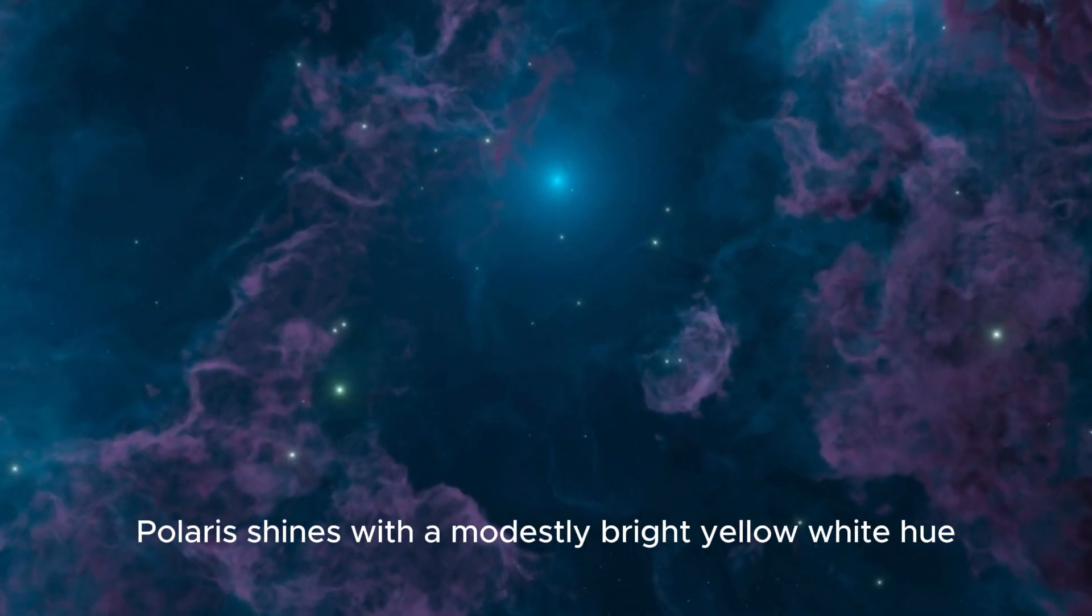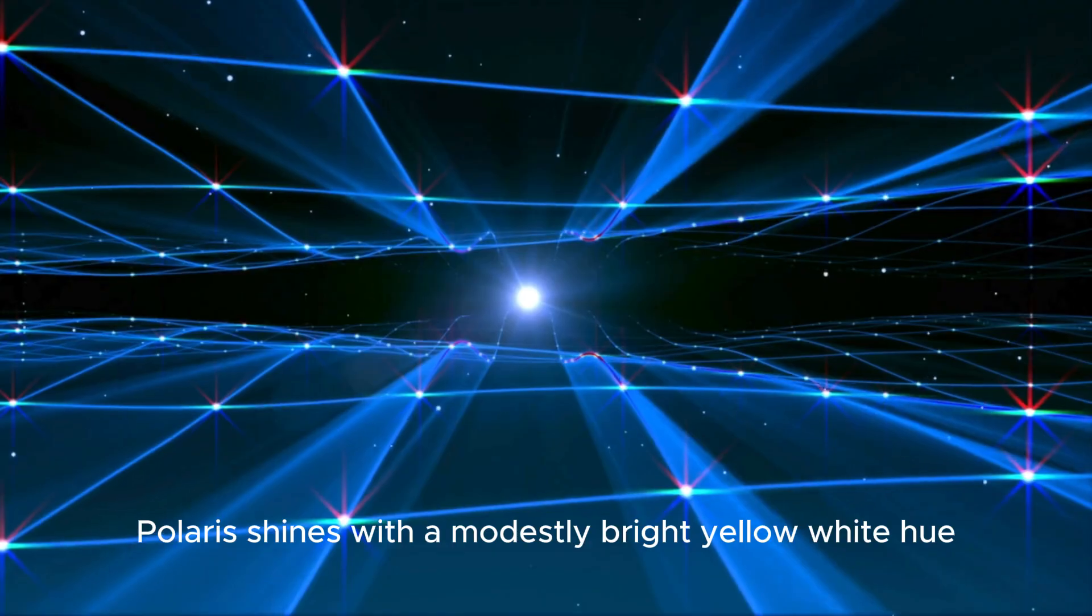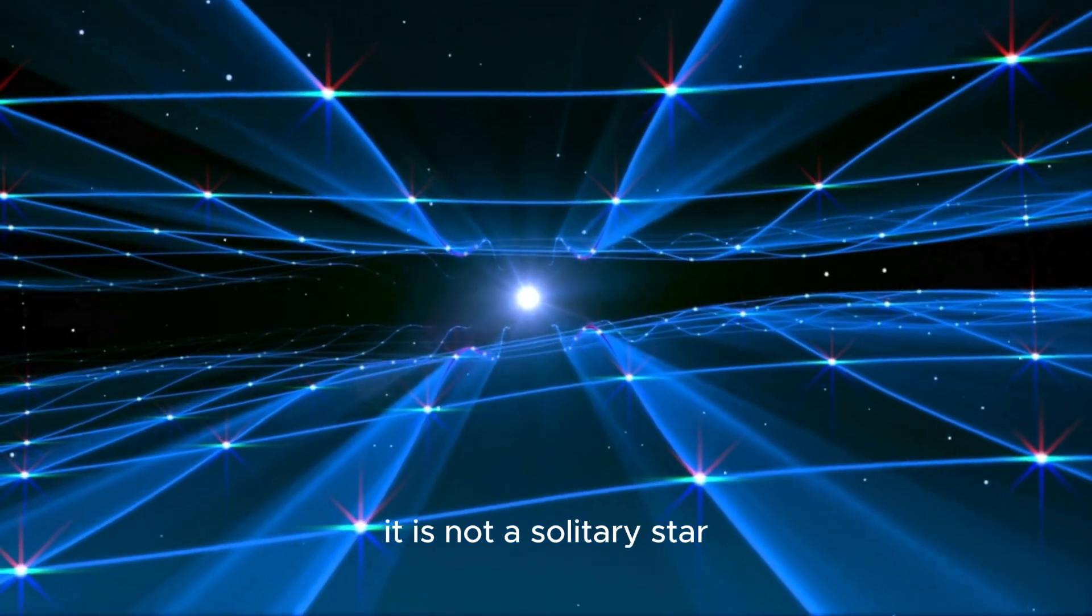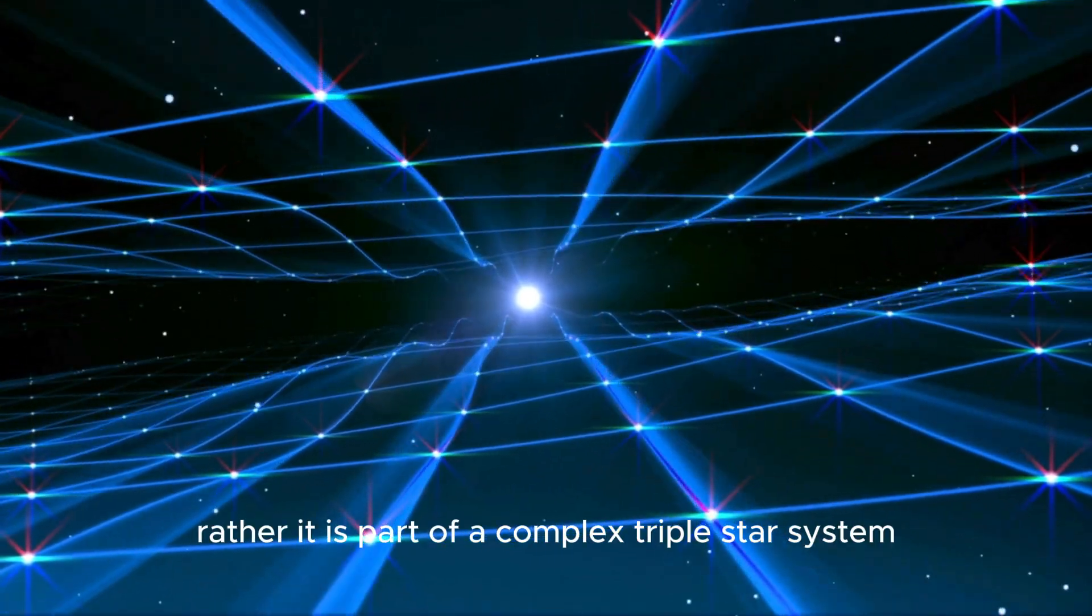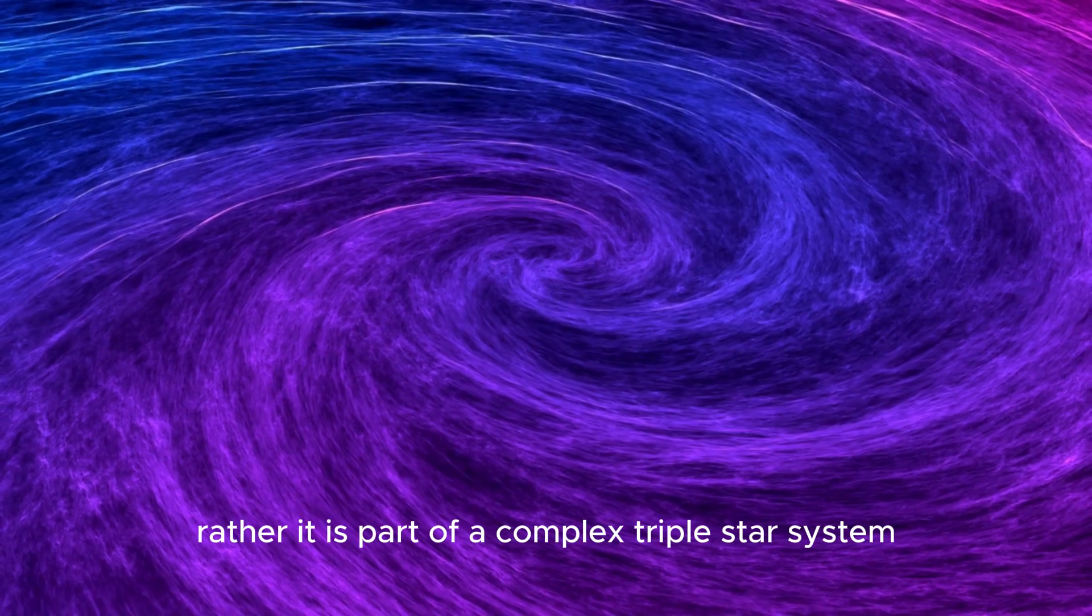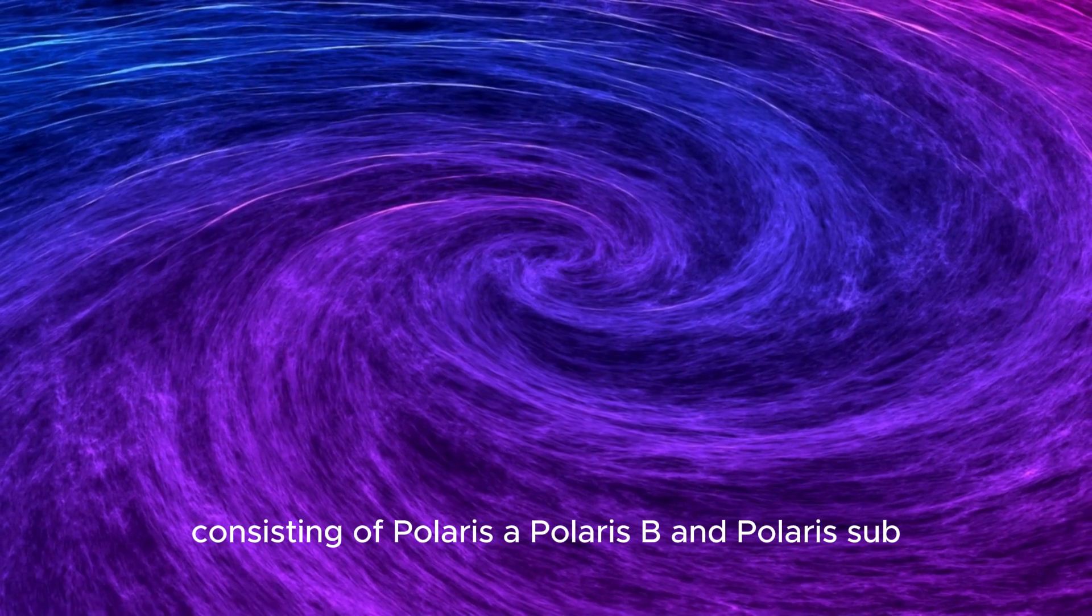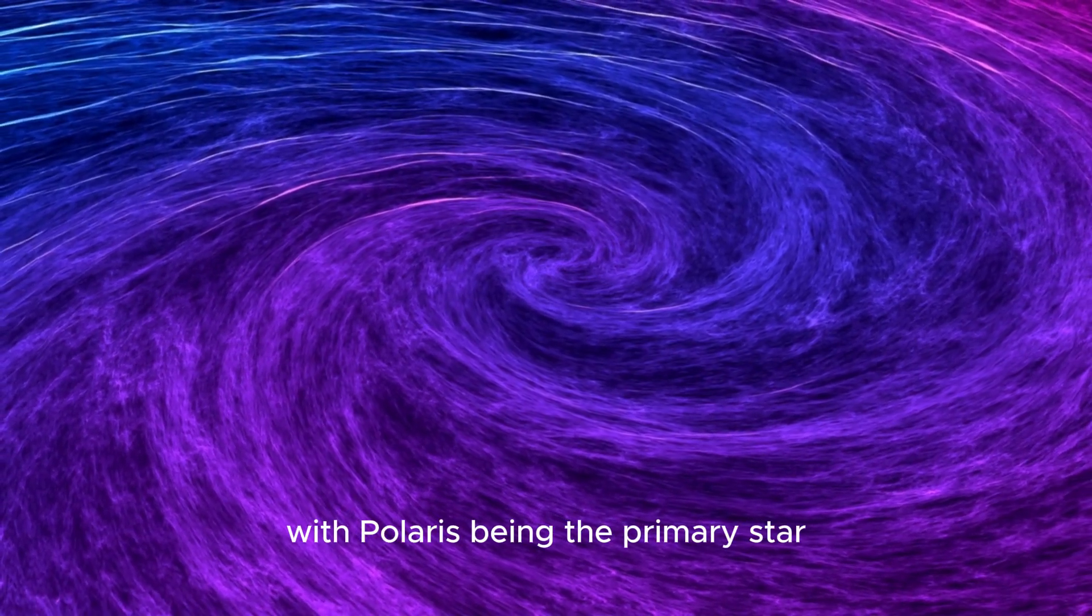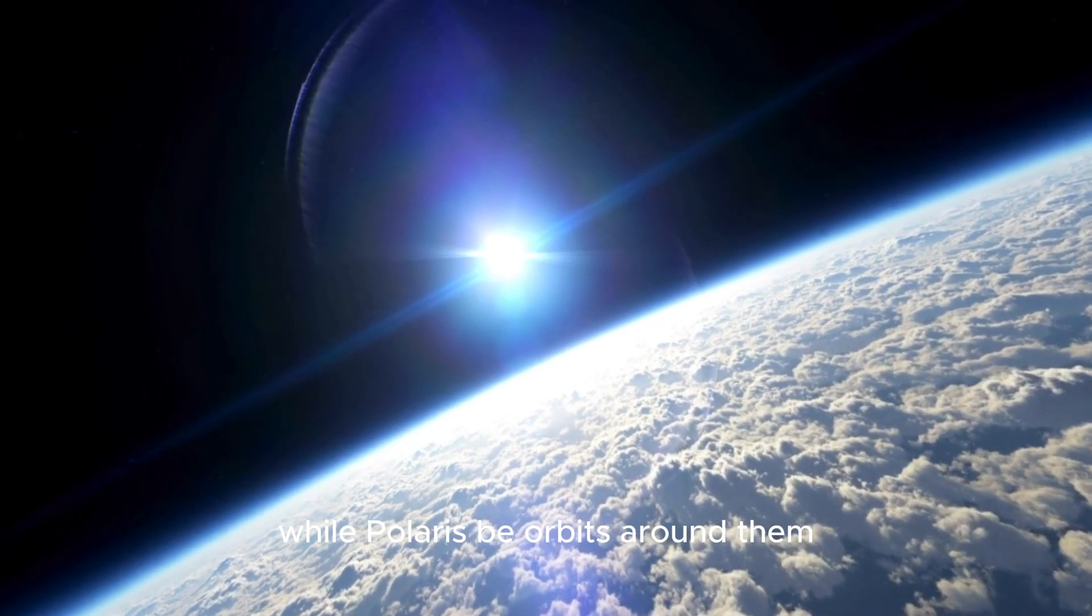Polaris shines with a modestly bright yellow-white hue, and it is much larger and brighter than our sun. It is not a solitary star. Rather, it is part of a complex triple star system, consisting of Polaris A, Polaris B, and Polaris sub, forming a binary pair with Polaris A being the primary star while Polaris B orbits around them.